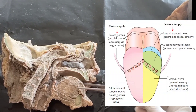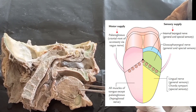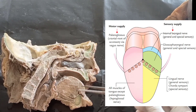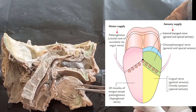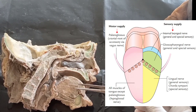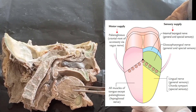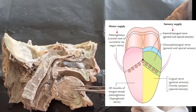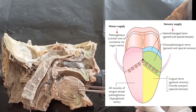For motor nerve supply, all these muscles are supplied by the hypoglossal nerve, which is the 12th cranial nerve. The exception is the palatoglossus, which is supplied by the cranial root of the accessory nerve via the pharyngeal plexus through the vagus nerve.